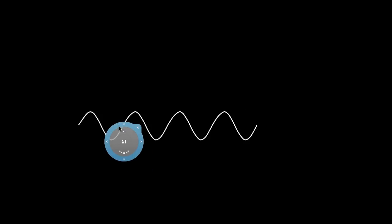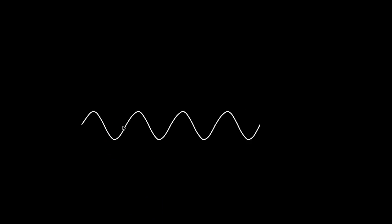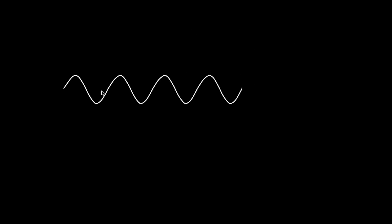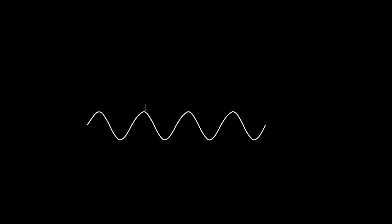If you've got a medium and you disturb it, you can create a wave. And if you create a wave in a medium that has no boundaries — a medium that's so big this wave basically never meets the boundary — then there's nothing stopping you from making a wave of any wavelength or frequency whatsoever. In other words, there's not really any naturally preferred wavelengths; they're all pretty much as good as any other.